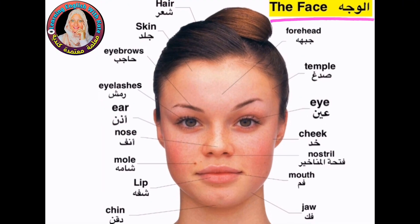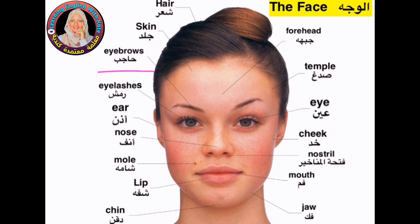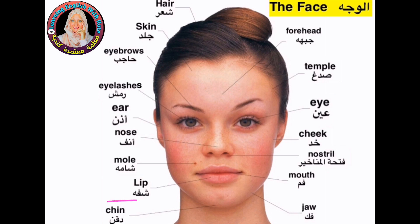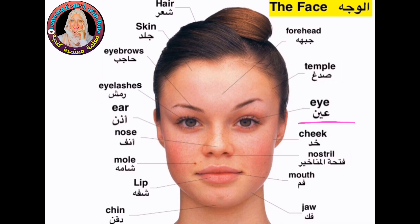الوجه — The face. Hair. Skin. Eyebrows. Eyelashes. Ear. Nose. Mole. Lip. Chin. Forehead. Temple. Eye. Cheek. Nostril. Mouth. Jaw.